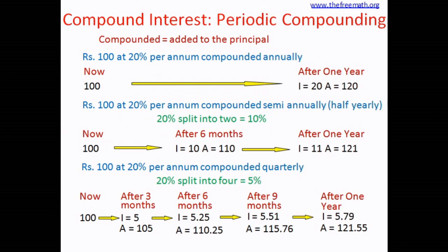Looking at all the amounts after one year: compounded annually gives 120, compounded semi-annually gives 121, and compounded quarterly gives 121.55. You can see that the more compounding you do, the higher the amount is. We did a lot of calculations to understand this and see how it works out.